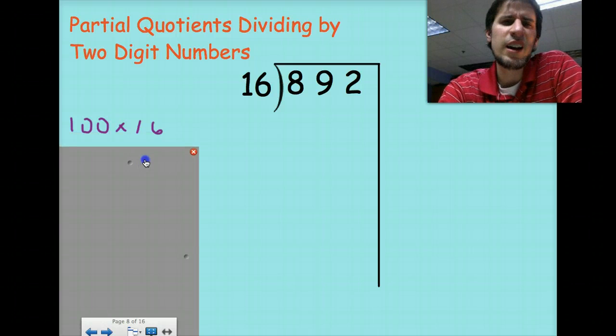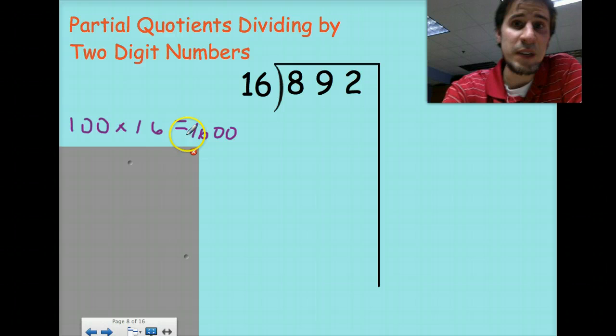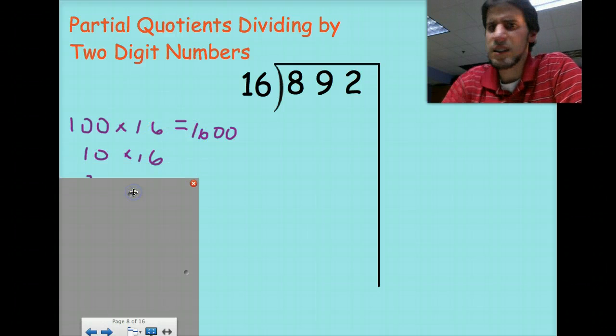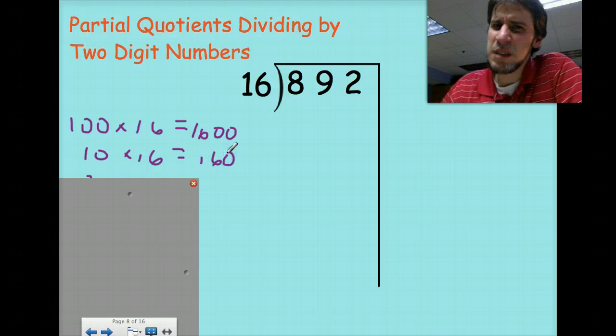So I started thinking like a hundred times sixteen, but wait a minute, hundred times sixteen, that's gonna give me sixteen hundred or one thousand six hundred. I don't need to be that big. So let's go nice and easy. Let's go with ten times sixteen. So that's a hundred and sixty. That's gonna be a lot of tens.